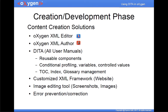The next phase is the development or creation phase. We use Oxygen XML Editor and Author. Obviously we use DITA for the user manuals. We have reusable components, conditional profiling, variables, and controlled values. We manage the DITA map as a table-of-contents structure. We use index terms to create an index in the output, and glossary terms for the output. For the website, we use a customized XML framework. For screenshots, icons, and images, we use a basic image editing tool. And then we have error prevention and correction features.